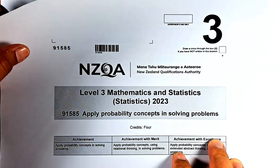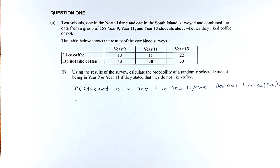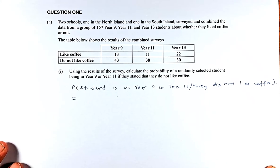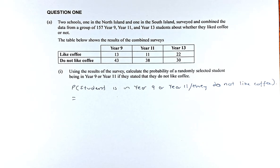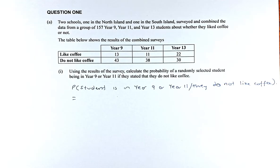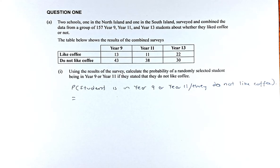This is a straightforward question and most people who have done Level 2 statistics should have no problem answering it. The question is: two schools, one in the North Island and one in the South Island, surveyed and combined the data from a group of 157 Year 9, Year 11, and Year 13 students about whether they like coffee or not. The table shows the results with 'like coffee' and 'do not like coffee' in the rows, and Year 9, Year 11, Year 13 in the columns.